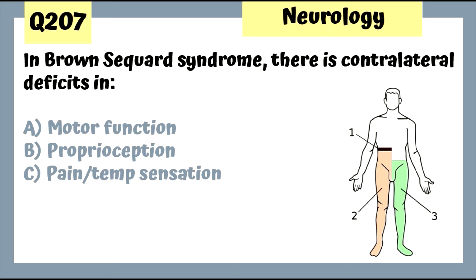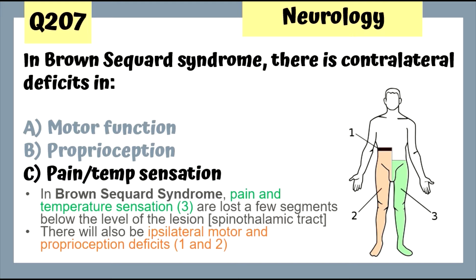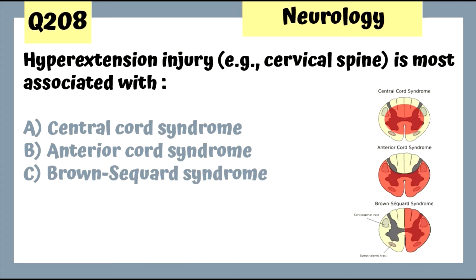Question 207: In Brown-Séquard syndrome, there's contralateral deficits in what? Brown-Séquard syndrome is hemisection of the spinal cord. There will be contralateral deficits in pain and temperature sensation. In terms of motor function and proprioception, these will be lost on the ipsilateral side. Question 208: Hyperextension injury of the cervical spine is most associated with central cord syndrome.